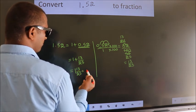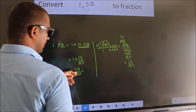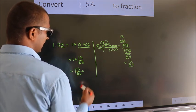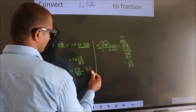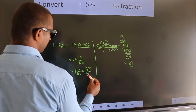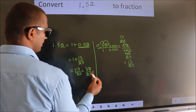And in improper fraction, it is 1 into 25 plus 13. So 1 into 25 is 25, plus 13 is 38. 38 by 25 is our fraction.